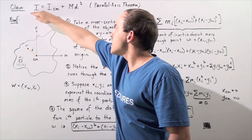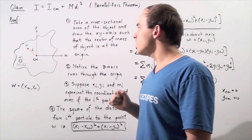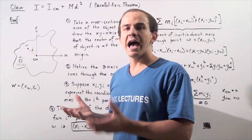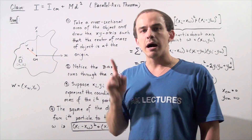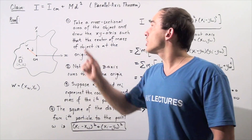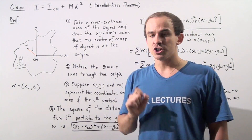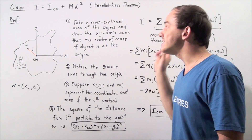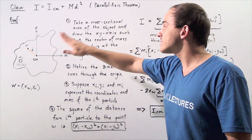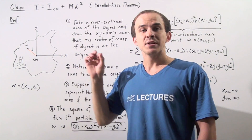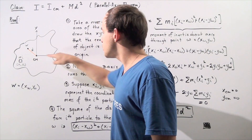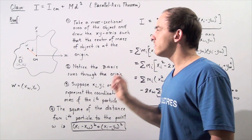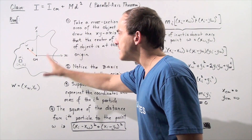We want to show that this is in fact true. Let's begin our proof by taking some randomly shaped object. Suppose we have a three-dimensional object and we take the two-dimensional cross-sectional area of the object and draw the xy-plane such that the center of mass of that object lies directly at the origin. The origin is at this point and that's exactly where our center of mass of our two-dimensional object is.